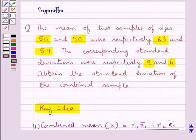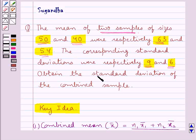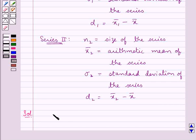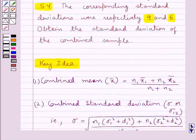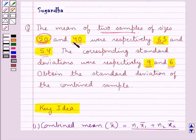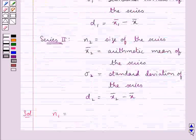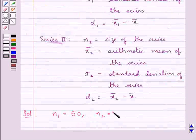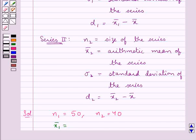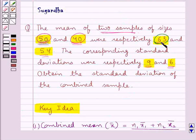Now consider the question. We are given two samples, their respective sizes, their means, and their corresponding standard deviations, and we are supposed to find the standard deviation of the combined sample. Here we have n1, the size of the first series, which is given as 50, and n2, the size of the second series, which is 40. x̄1, the arithmetic mean of the first series, is given as 63, and the arithmetic mean of the second series is 54.